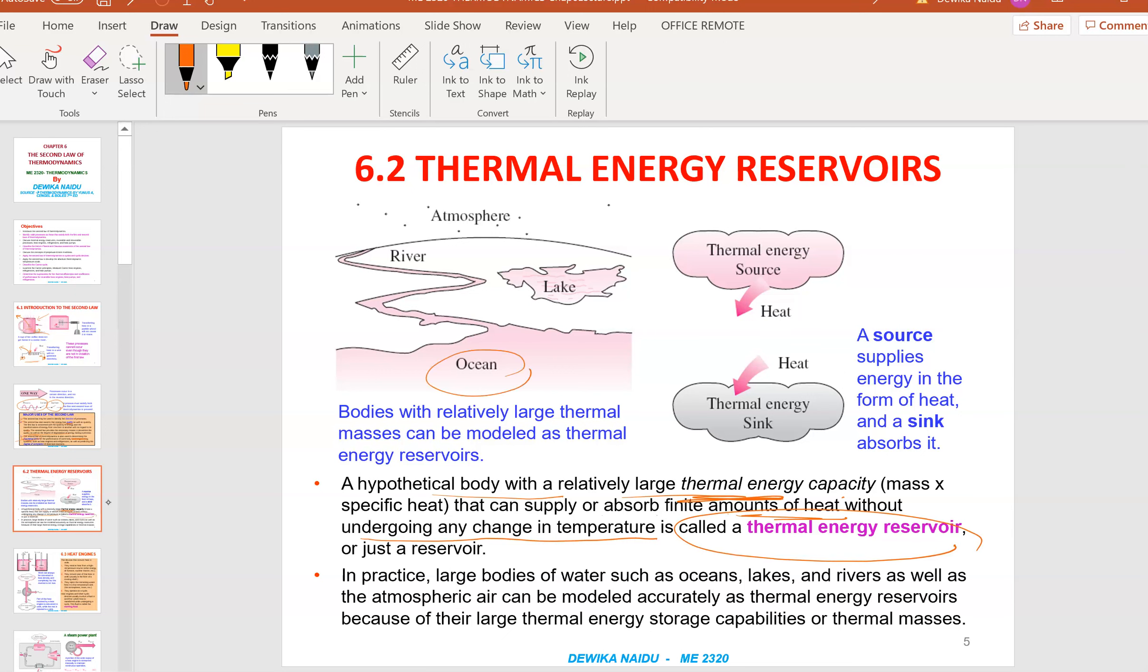For example, the ocean. If you pour a kettle of hot water into the ocean, will it affect the ocean's temperature? Of course no. The temperature is not going to rise. Likewise, your atmosphere—like houses where they all turn on the heater during the winter—does the winter get warmer? No. So the ambient temperature, the ambient air, is also a reservoir, a huge reservoir. Reservoirs can be large bodies such as oceans, lakes, rivers, the atmosphere. Source is the place where the heat is being started, and sink is the place where the heat is being released.